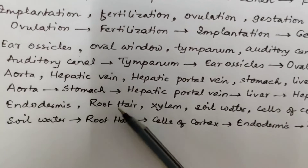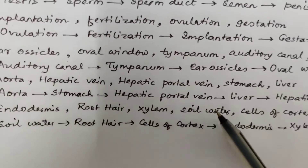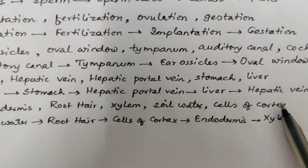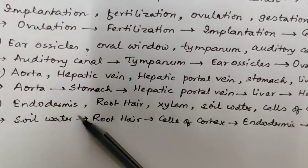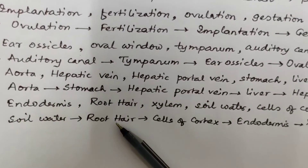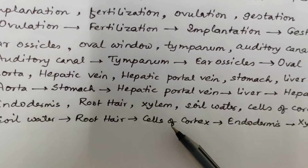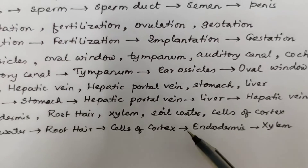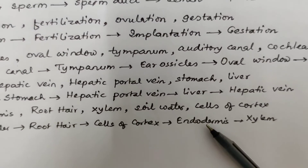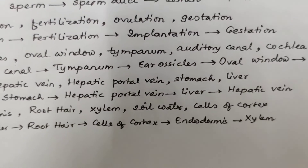Fifth sequence: soil water → root hair → cells of cortex → endodermis → xylem.